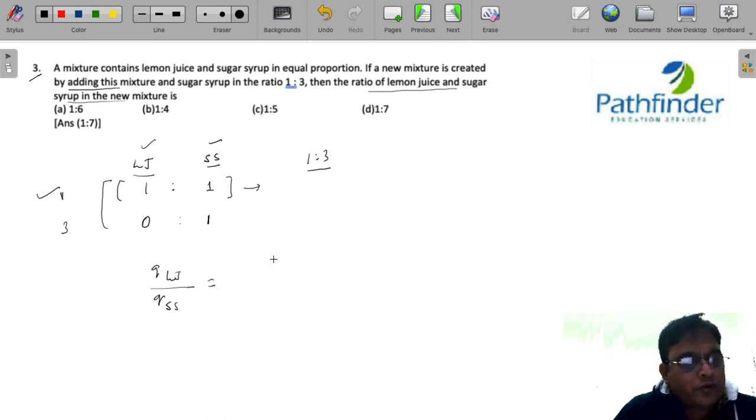So the ratio is equal to quantity of lemon juice upon quantity of sugar syrup. What is the quantity of lemon juice? 1 by 2 into 1.